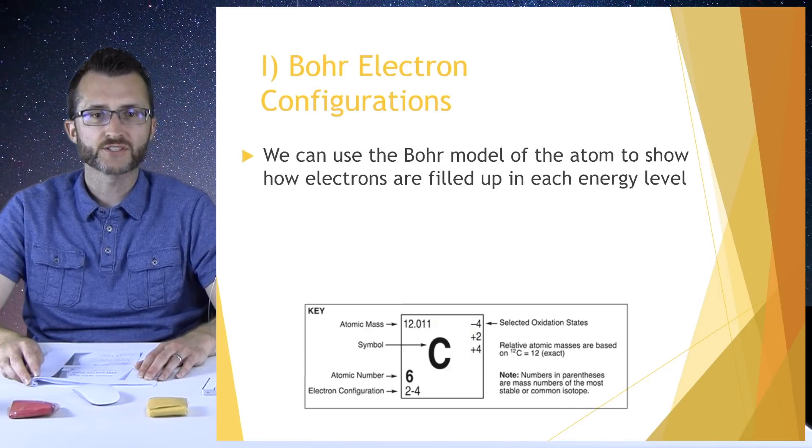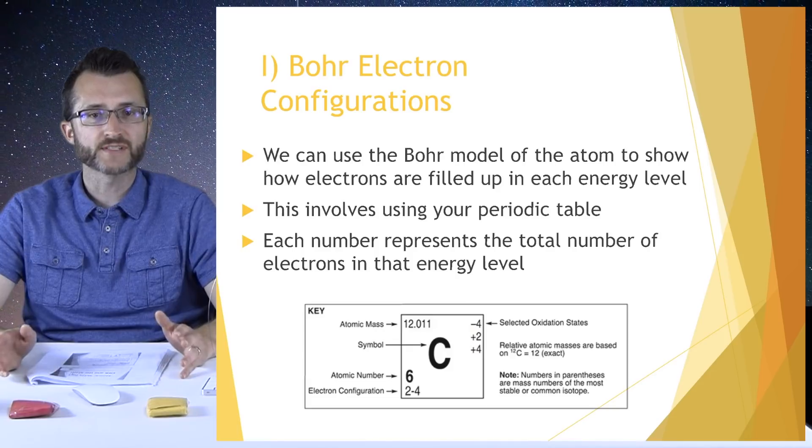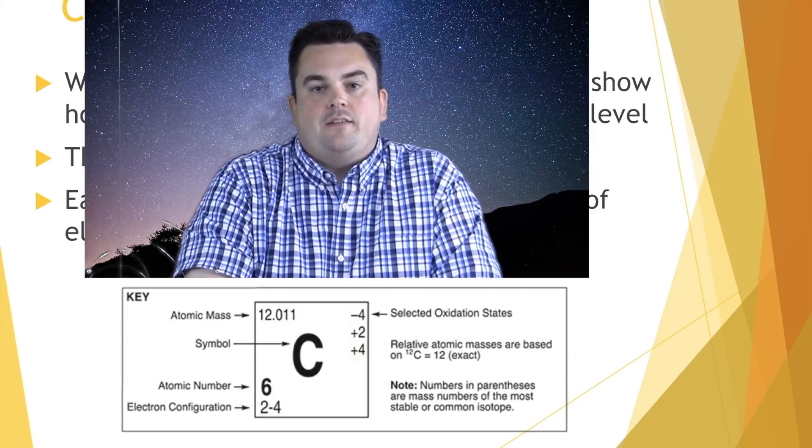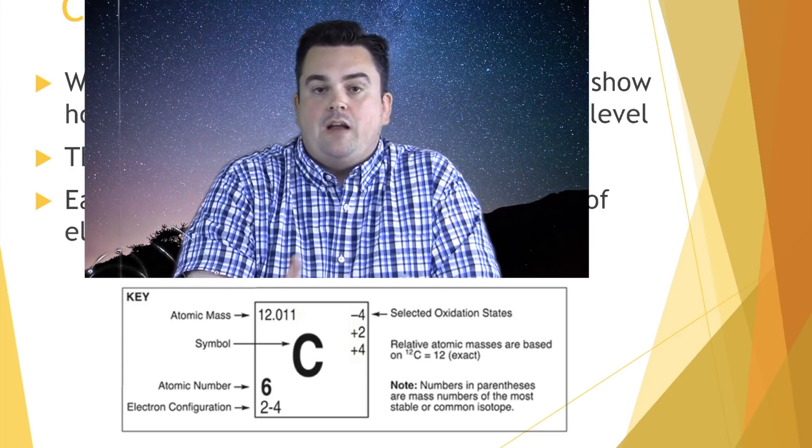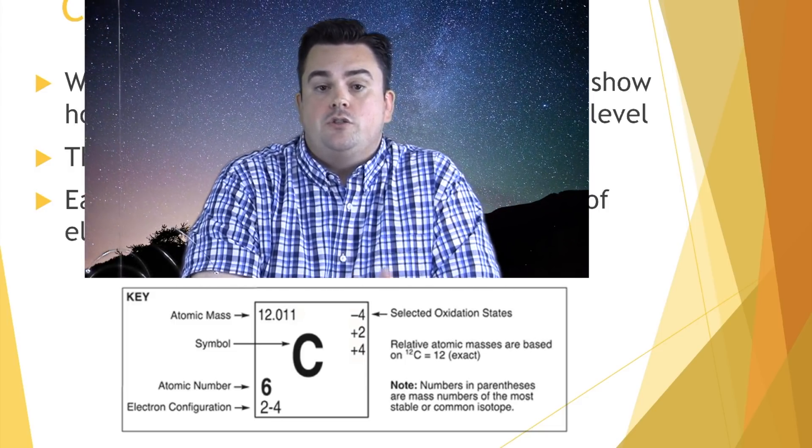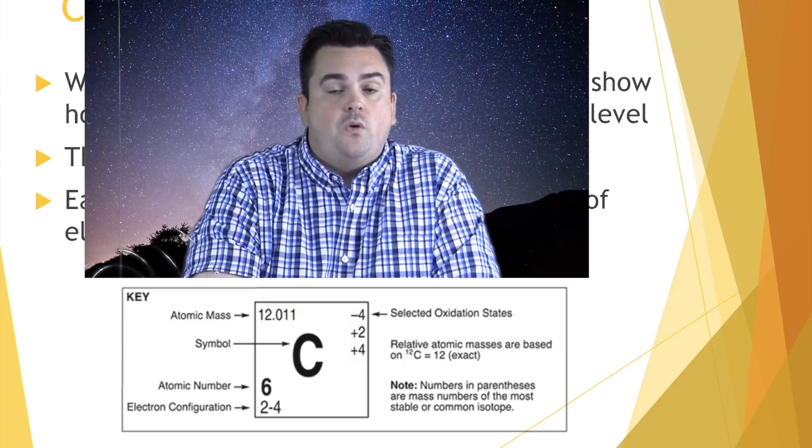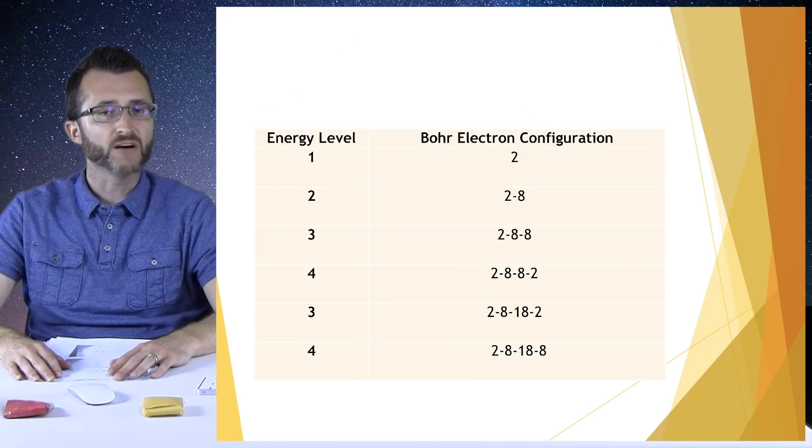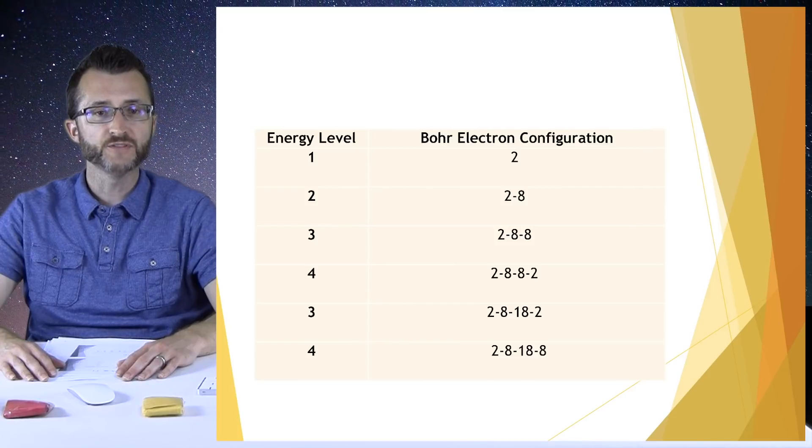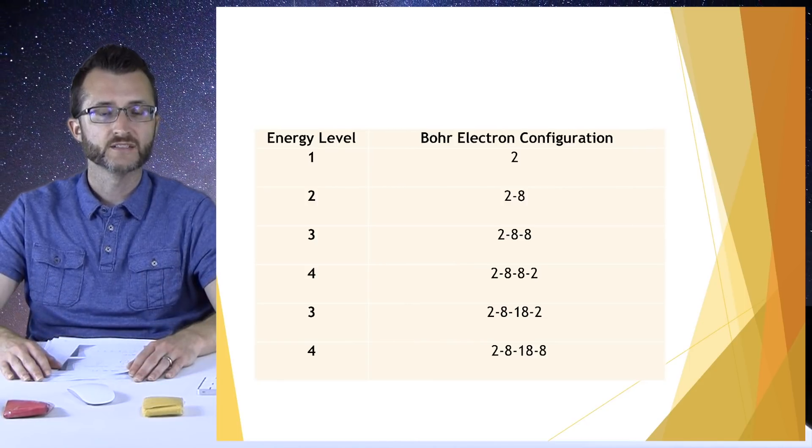We can use the Bohr model of the atom to show how electrons are filled up in each energy level. This involves using your periodic table. Each number represents the total number of electrons in that energy level. If you look in the lower left-hand corner of every element box, you'll see it's labeled electron configuration. Carbon's electron configuration is 2-4. That first two means there are two electrons in the first energy level, and the four means there are four electrons in the second energy level. The first energy level is filled with two electrons. If we move to the second energy level, it would be full with a configuration of 2-8.